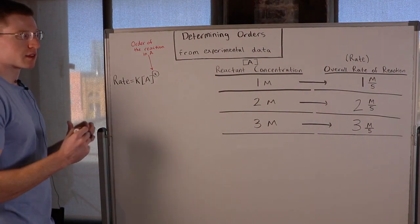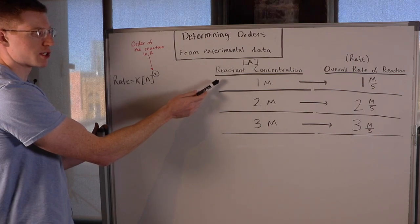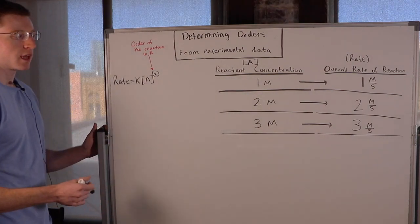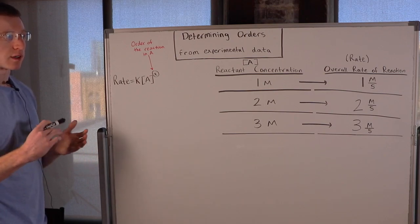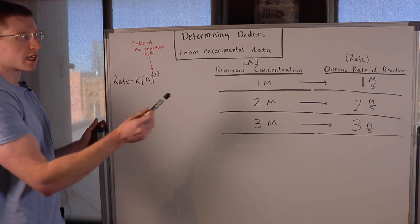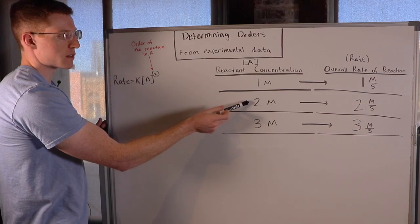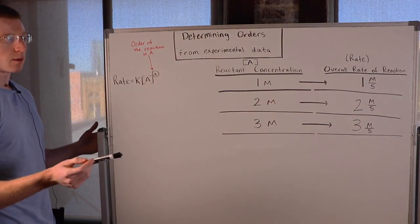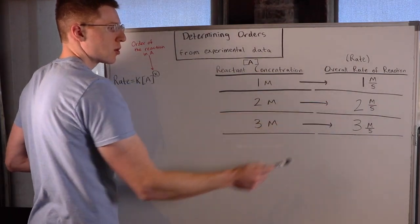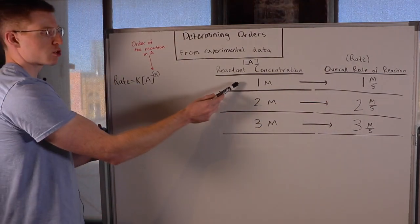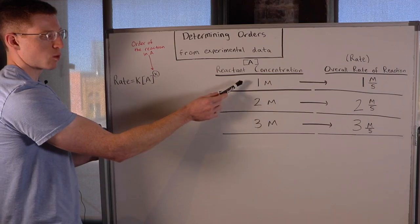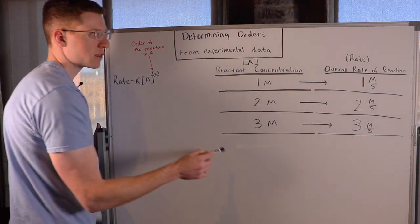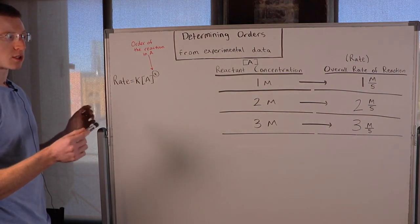In this next case I've done the same thing — I set the initial concentration of A at 1, 2, and 3 molar and saw how that affected the overall rate. When we doubled the initial concentration of A we doubled the overall rate, from 1 molar per second to 2 molar per second. And when we tripled the initial concentration of A from 1 to 3 molar, we tripled the overall rate from 1 molar per second to 3 molar per second.